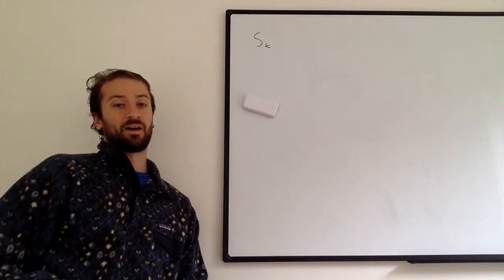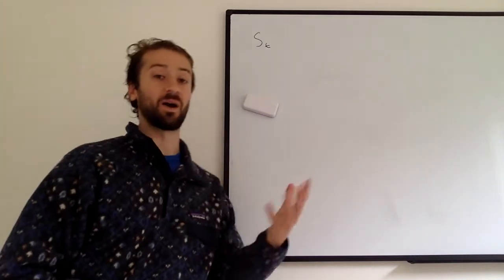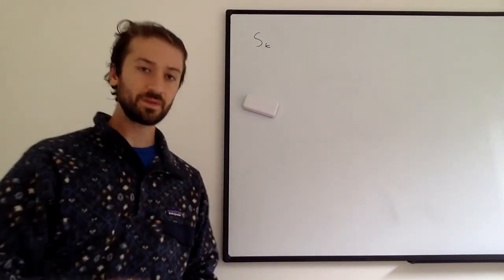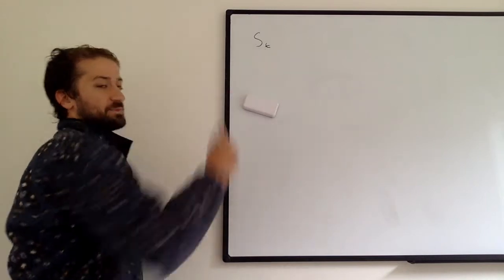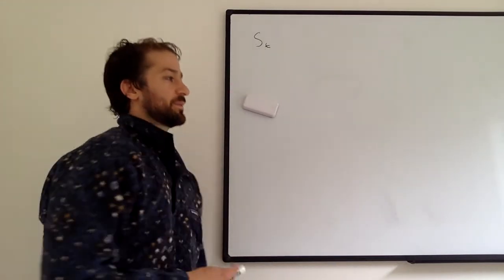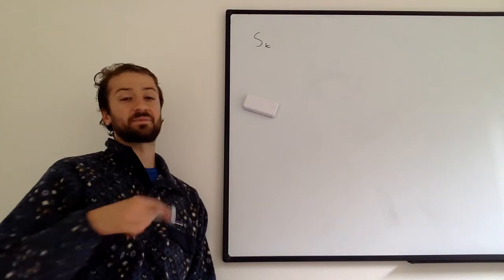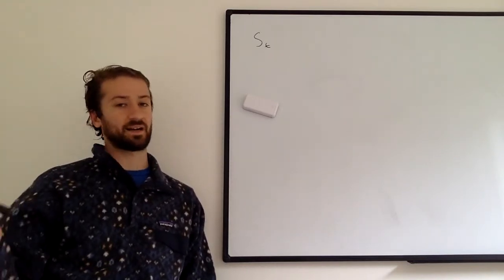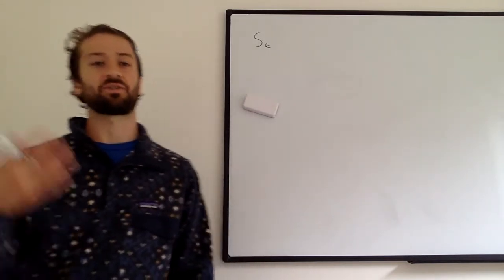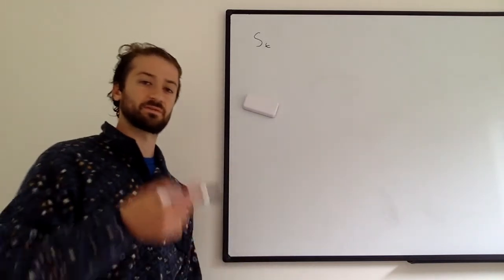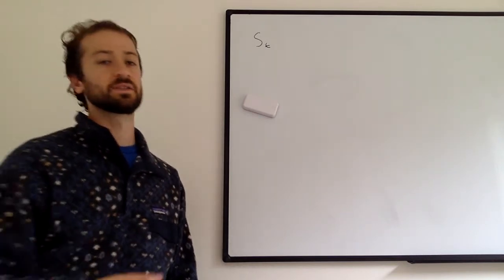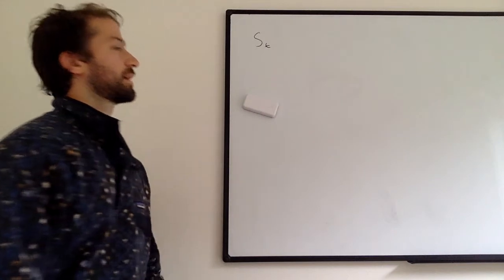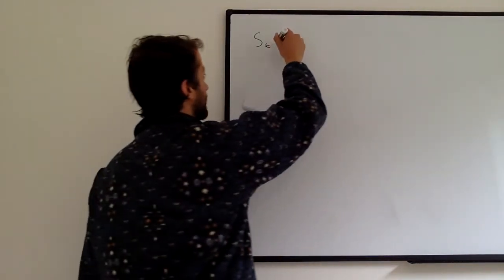Today we're going to talk about how we're going to be modeling a stock as we approach actually using the Black-Scholes formula. We use this notation: S sub T is the price of the stock at time T. A stock is some percent of ownership in a company. You buy a share of Apple, and maybe at time one it's worth $400, at time two it's worth $410 — the price moves around through time.